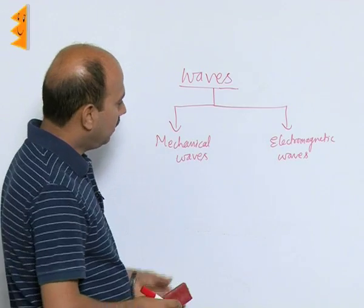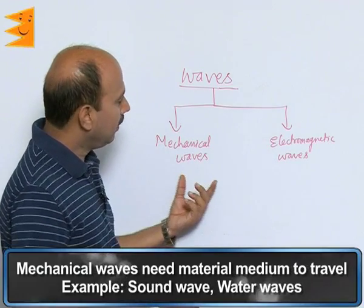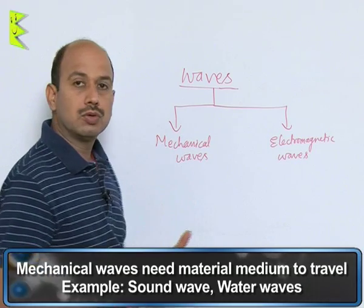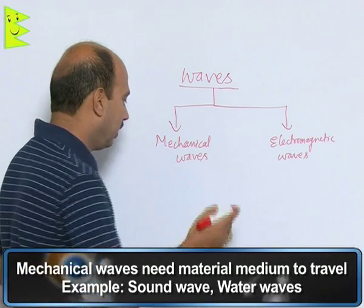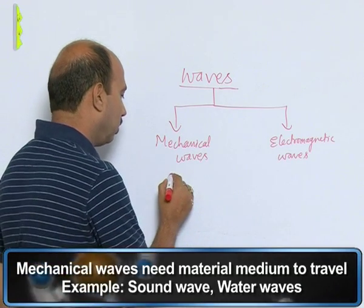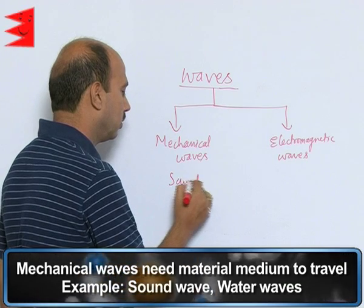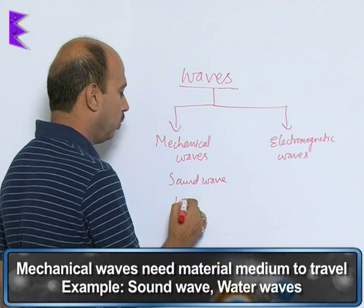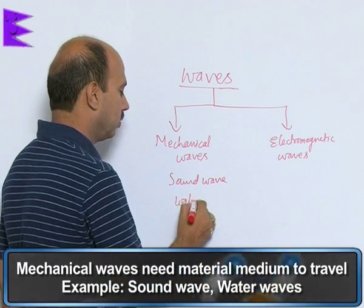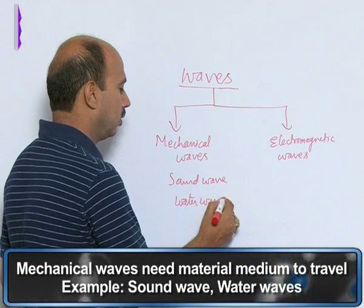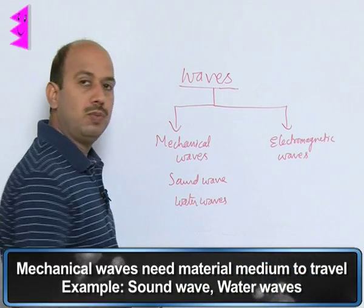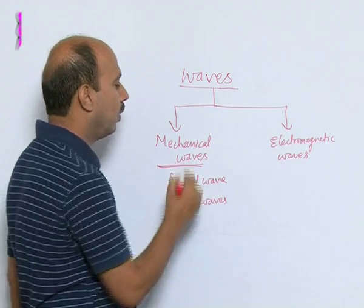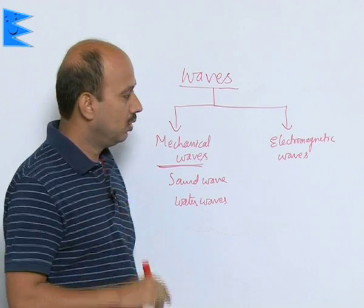Mechanical waves are those waves which need a medium to travel. Examples include sound waves and water waves — these waves need a medium. So mechanical waves require a material medium to travel.